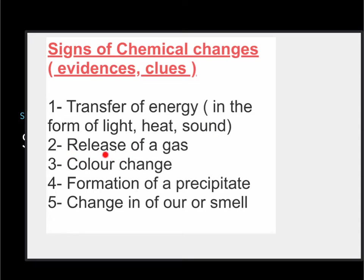Number two is the release of a gas. If you see some sort of bubbling or production of a gas, it means we have a chemical reaction happening. Number three is color change — when the color of a substance changes, it also indicates the occurrence of a chemical change.